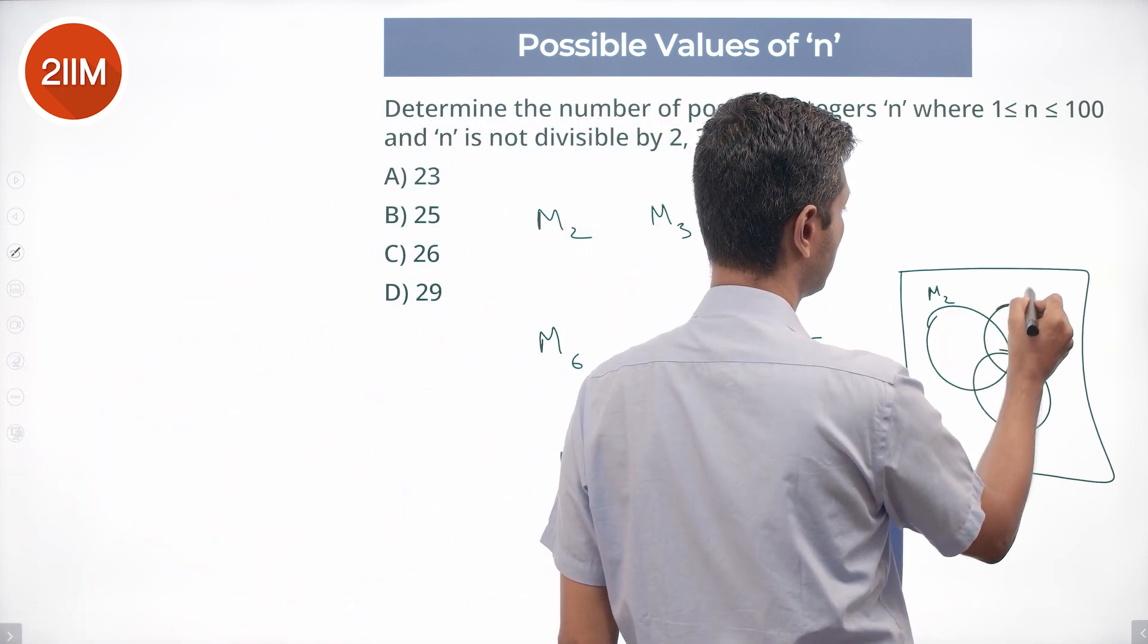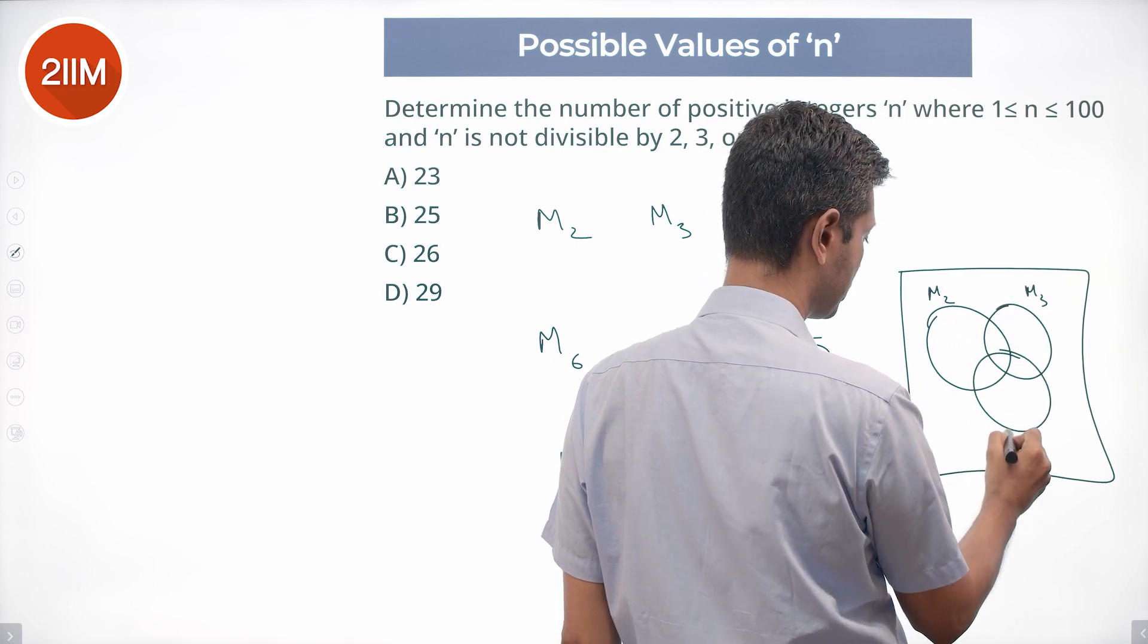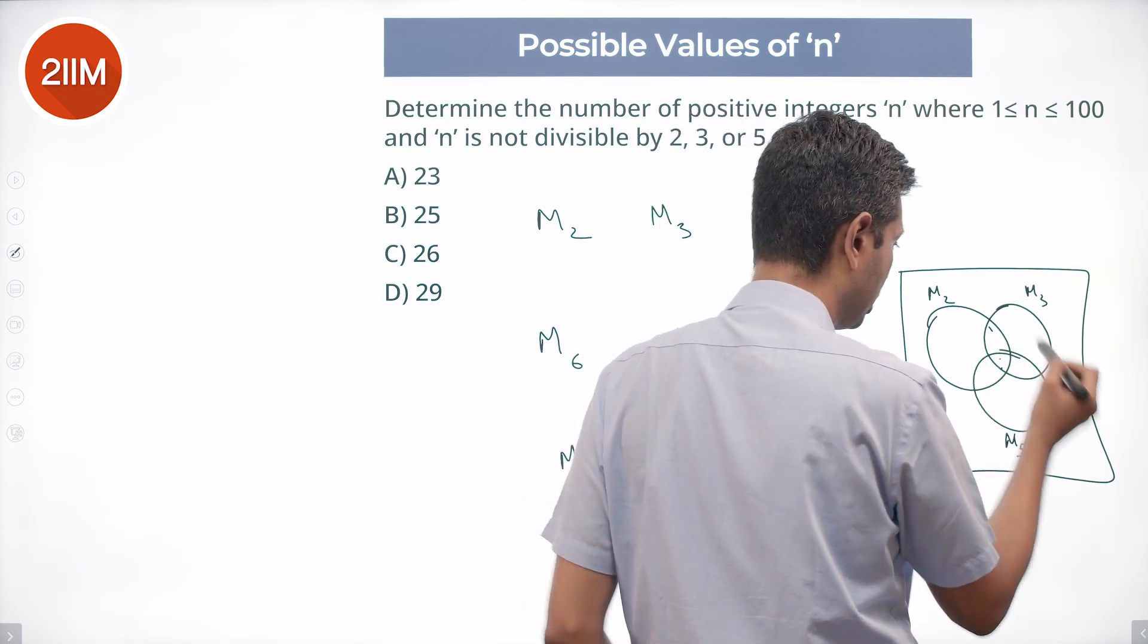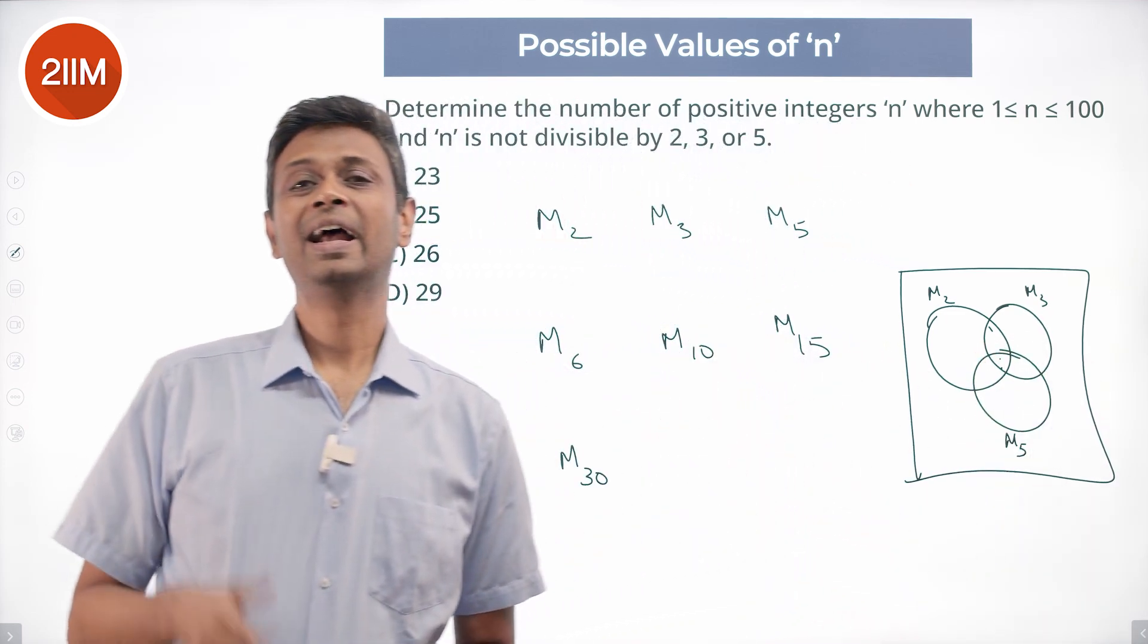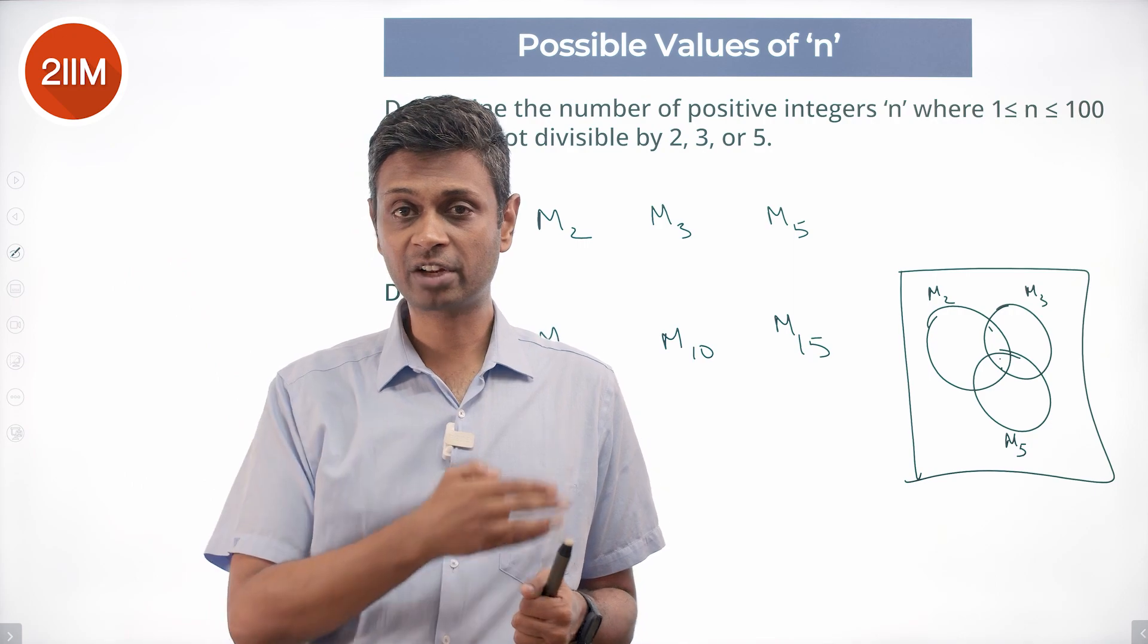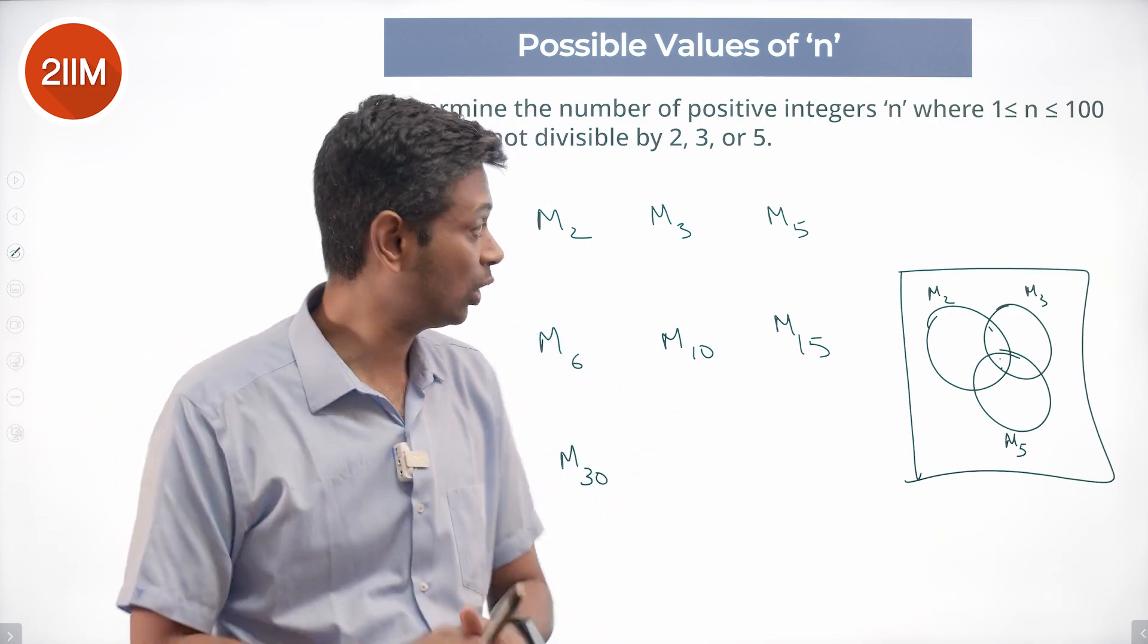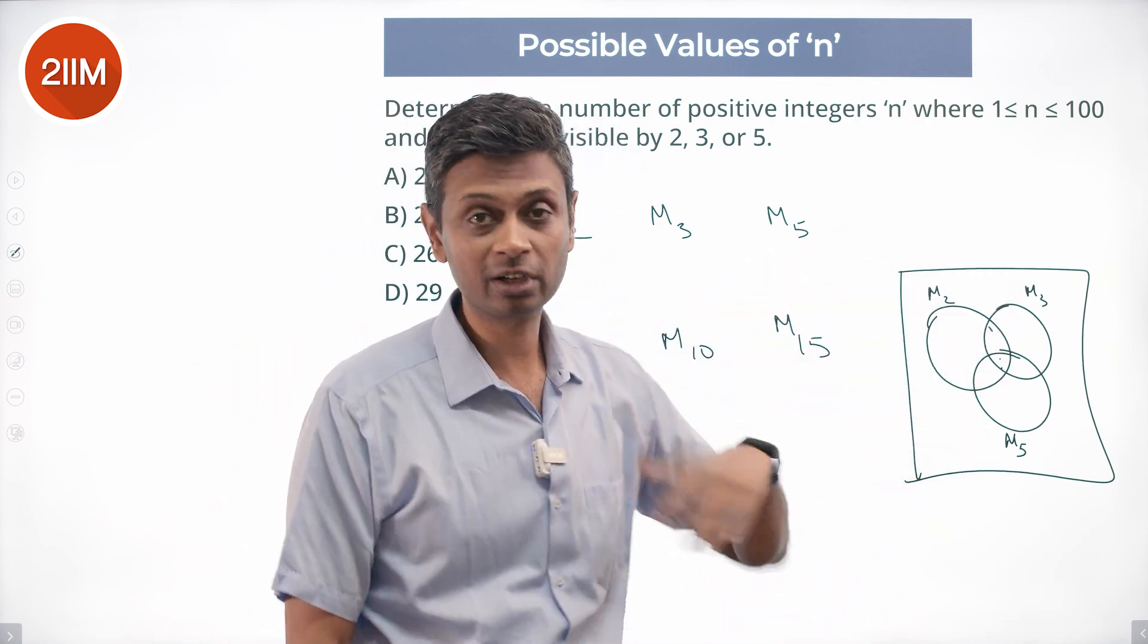Multiples of 2 which I'm calling M2, multiples of 3 M3, multiples of 5 M5. 2 and 3 multiples of 6, multiples of 15, multiples of 10, multiples of 2, 3, and 5. A plus B plus C minus A intersection B minus B intersection C minus A intersection C plus A intersection B intersection C. Do the whole thing, we'll get this, subtract from 100, and we're through.